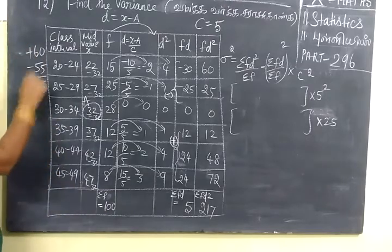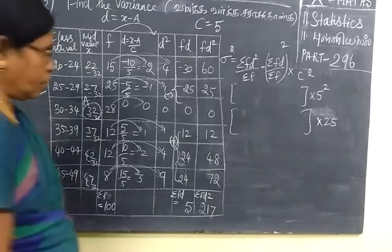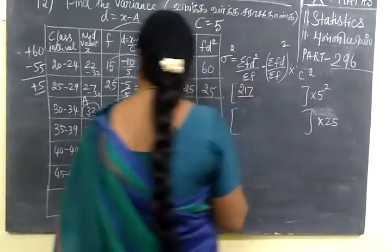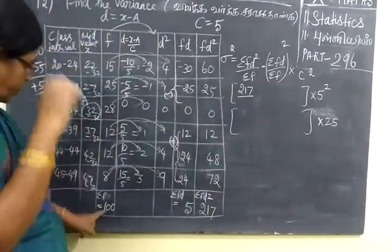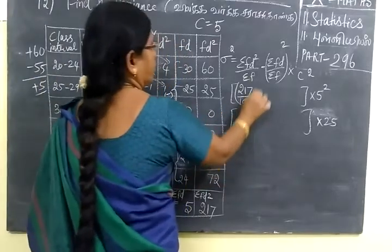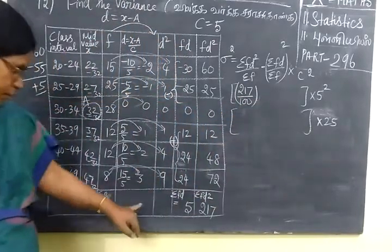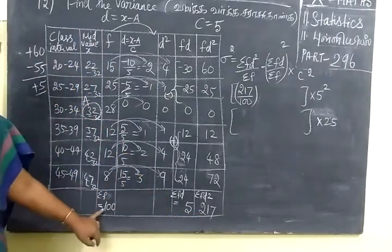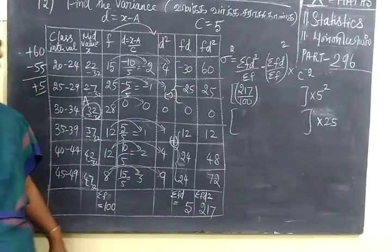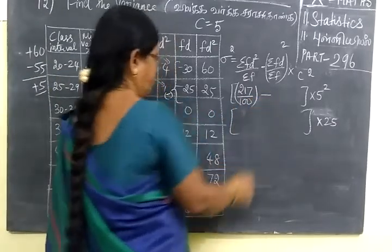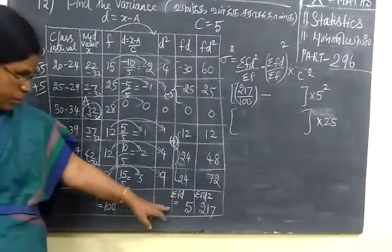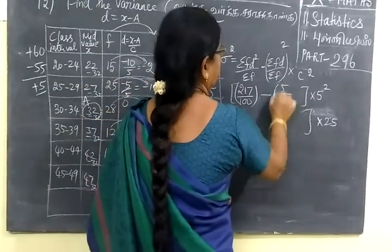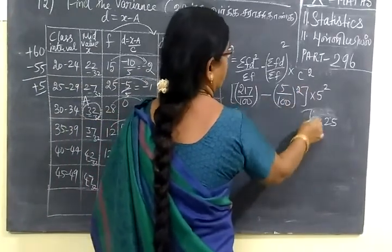Now you substitute 217 by sigma F. Sigma F is 100, so 217 divided by 100 minus sigma FD square which is 217, then sigma F is 100, then minus sigma FD. Sigma FD is 5, so 5 divided by 100.